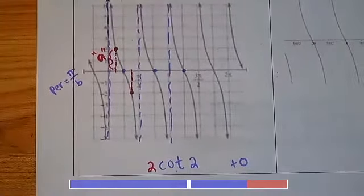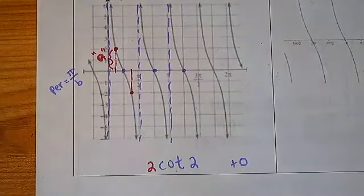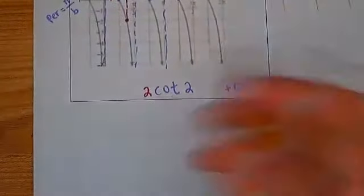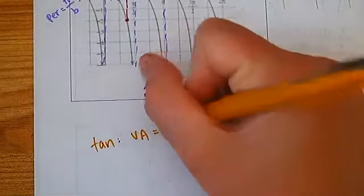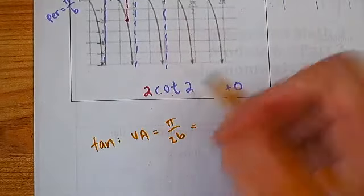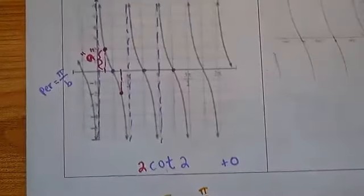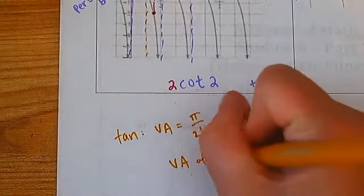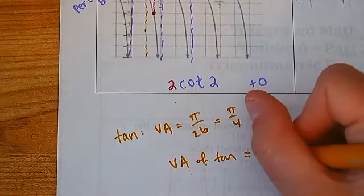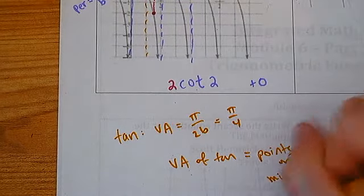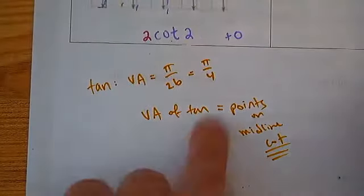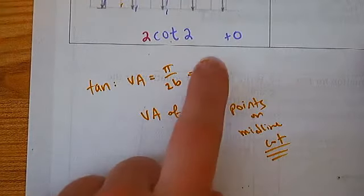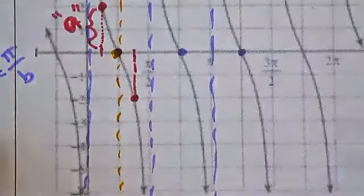Now we need to see if there was a phase shift. As a reminder, for tangent — not cotan — the vertical asymptote is at π/(2b). We found b = 2, so that's π/4. For tangent, there should be an asymptote at π/4. But asymptotes of tangent equal points on the midline for cotan. So if π/4 was an asymptote for tangent, it should be a midline point for cotan — and it is, right there. That tells us there is no phase shift, so we just put x.